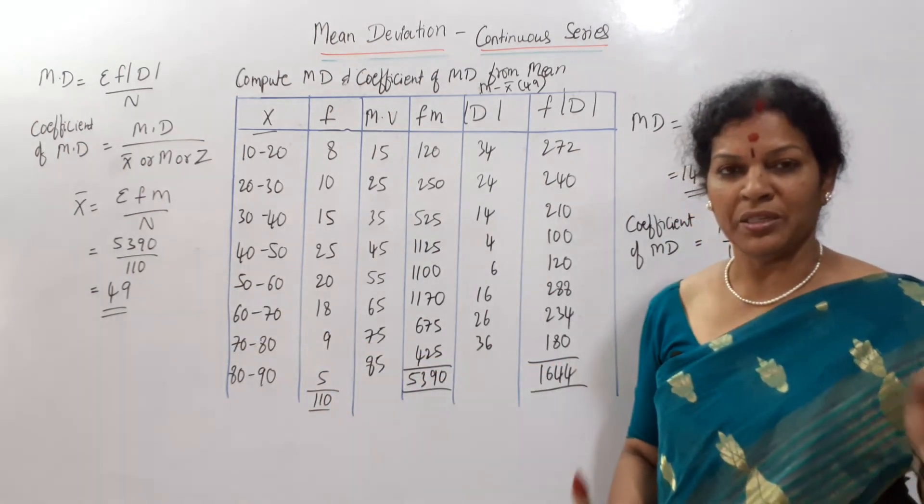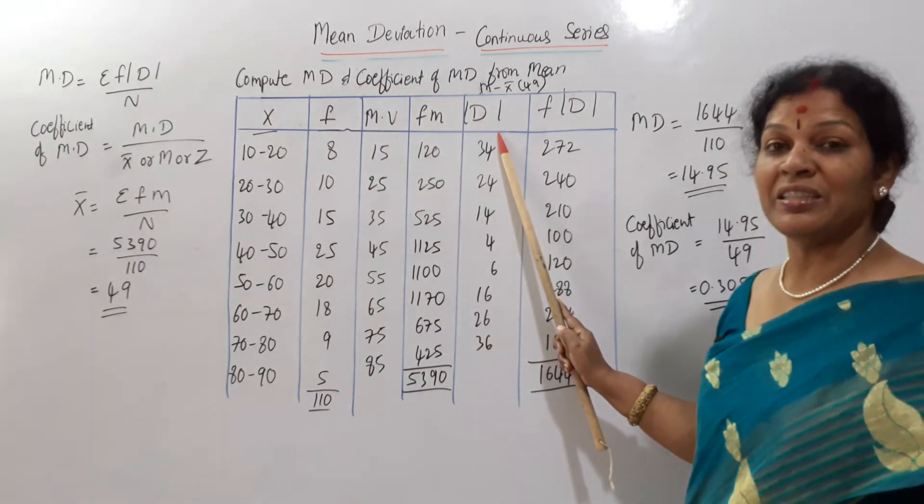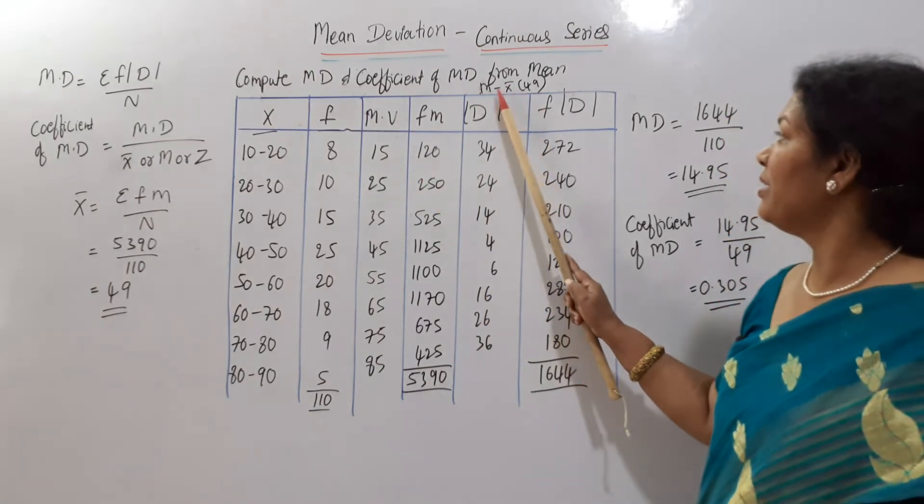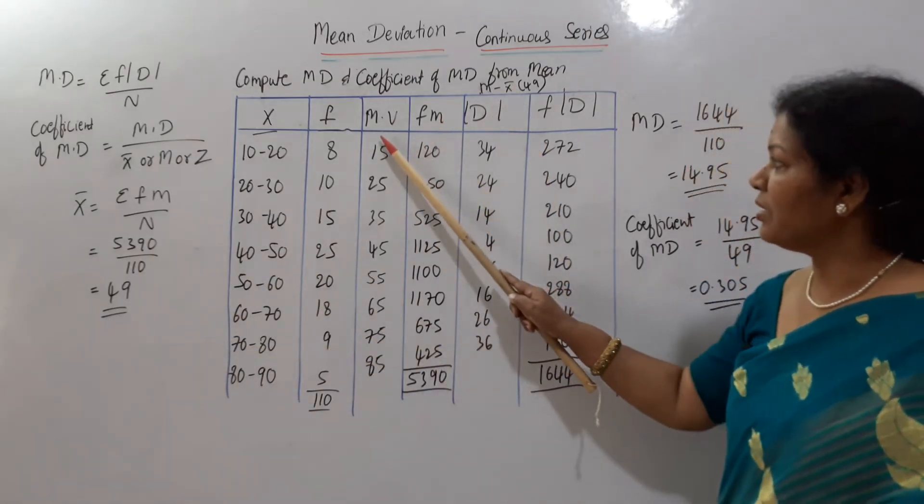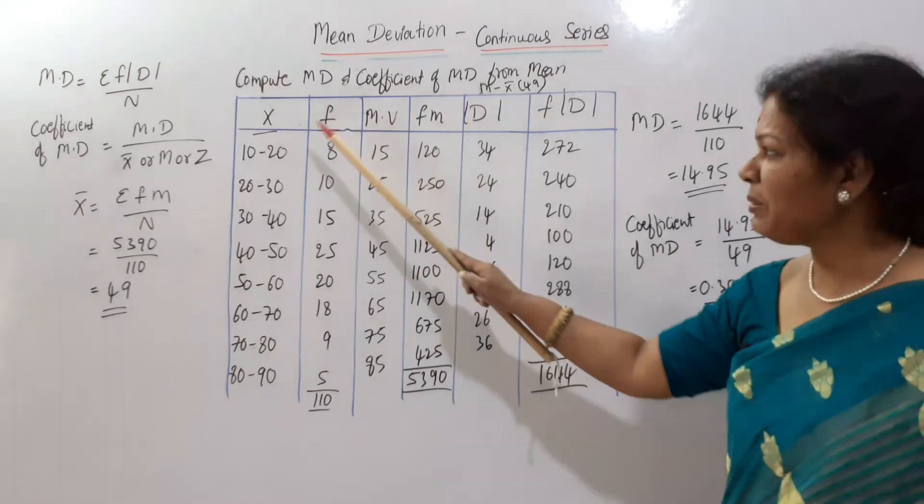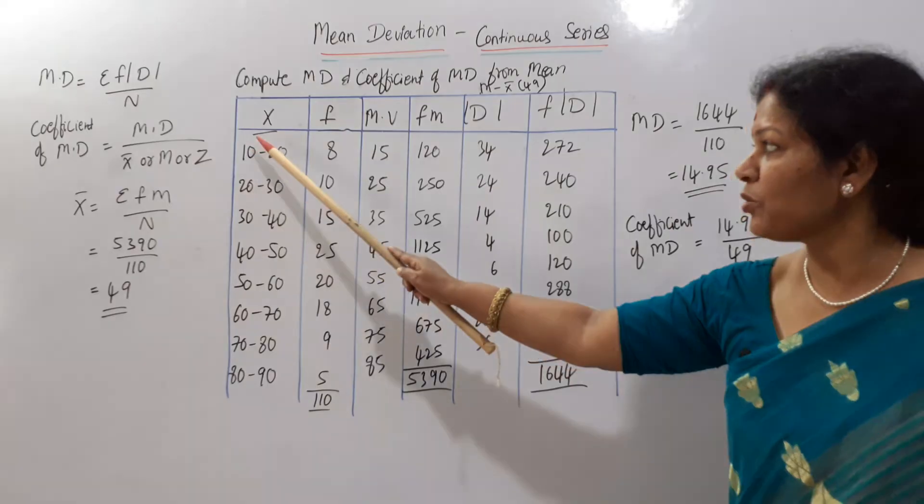Once if you get mean, immediately go for mod d. Mod d means m minus x bar. X bar is 49. M is here. What is this m? M represents the x. X is in class interval which you cannot use it directly. So representative of x is m.